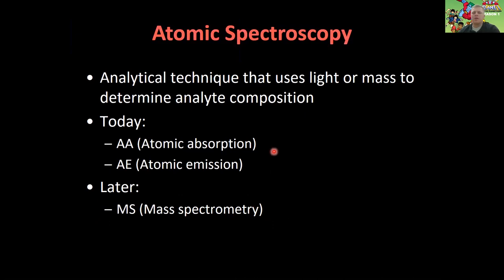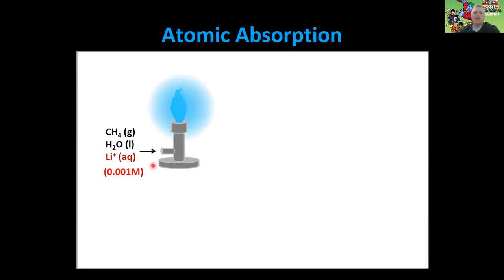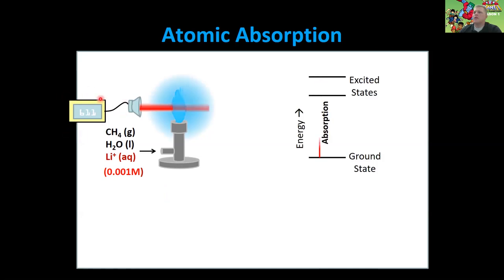Let's start talking about atomic absorption. In atomic absorption, we have some sort of fuel source and we pump our sample through — let's say we have an aqueous lithium sample, 0.001 molar concentration in water. We're flowing it through here along with some methane gas as a carrier gas up into a flame. Then we're going to shine a laser through it with a wavelength of light that perfectly matches the distance between a ground electronic state and some sort of excited electronic state.